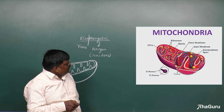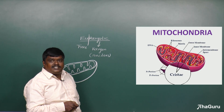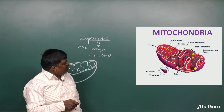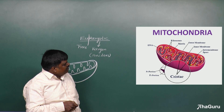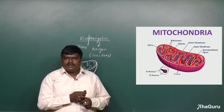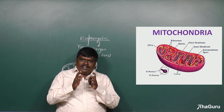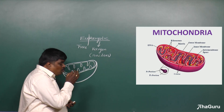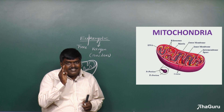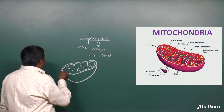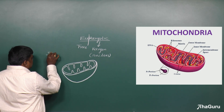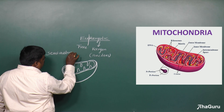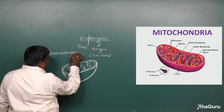These inner foldings are called cristae. So the outer membrane and inner membrane are there, and apart from that, mitochondria is a very important cell organelle because it is also known as a semi-autonomous organelle.